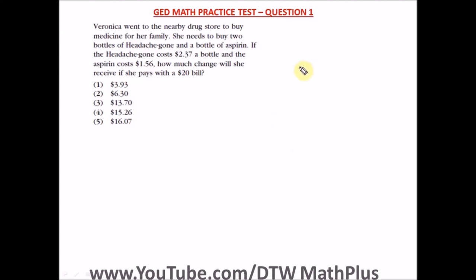Question one of the GED math practice test part one, that's the part with calculator, where calculator is allowed. It says Veronica went to the nearby drugstore to buy medicine for her family. She needs to buy two bottles of headache gun and a bottle of aspirin. If the headache gun costs $2.37...